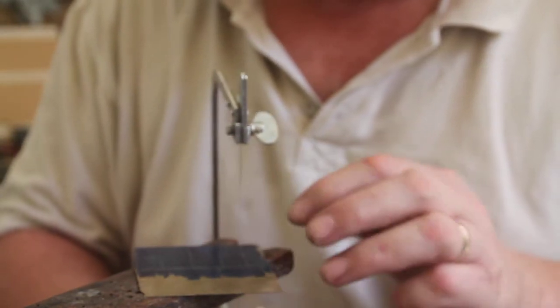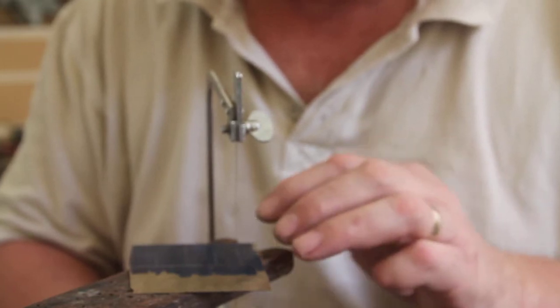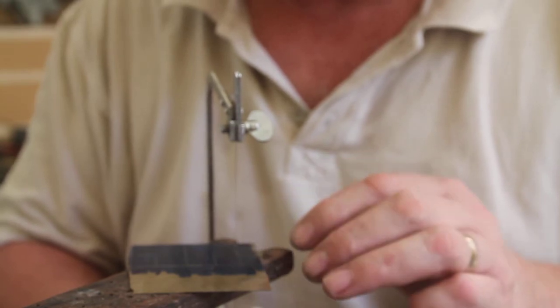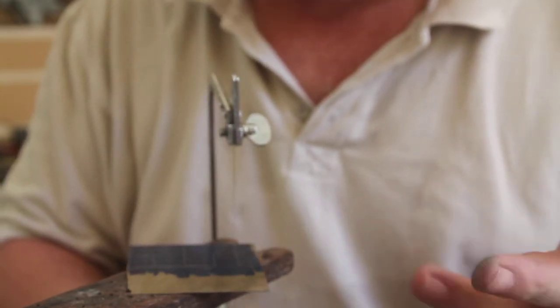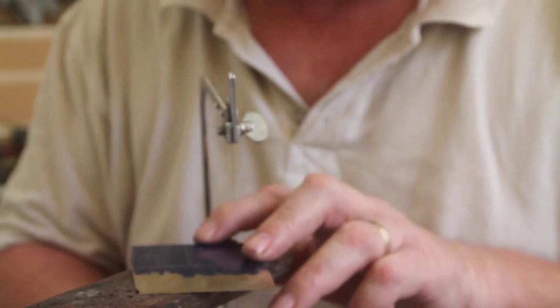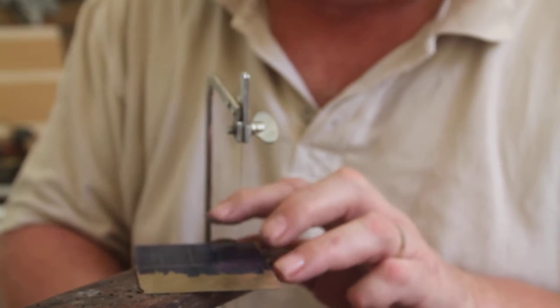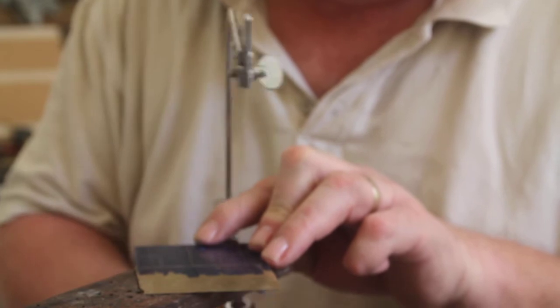So this is a 4-0 blade which is fine for this 20 thou. You can get away with it with 10 thou but it's not the best, you really want to go down to a 6-0. My 6-0 blades I don't know why but they're very brittle so they snap quite easily. So we don't want all the effing and blinding that goes on when I'm using those. We'll go with this and we'll see how we get on.